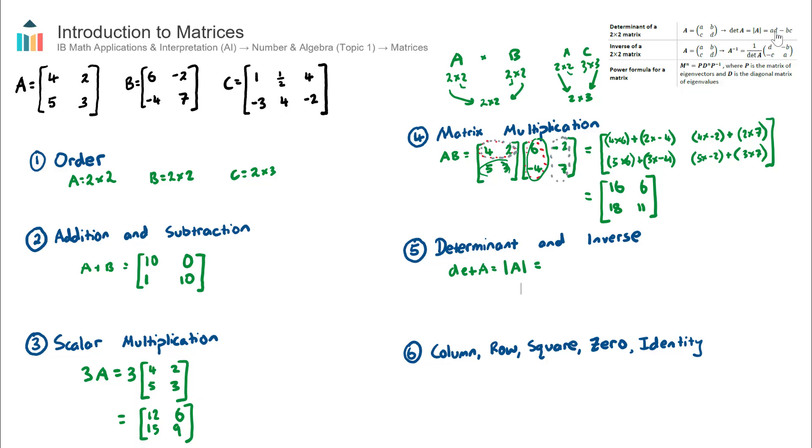We call that det A, or determinant of matrix A. We can also show that in symbol form like this. And that will equal, let's have a look at the formula here. So it's AD, so it's the top left multiply by the bottom right, subtract the top right multiply by the bottom left. So in our case here, this will be 4 times 3 subtract 2 times 5. And that is 12 take 10, which is 2. So we have just found the determinant of matrix A.